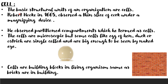The basic structural units of an organism are cells. Robert Hooke in 1665 observed a thin slice of cork under a magnifying device. He observed partitioned compartments which are termed as cells.